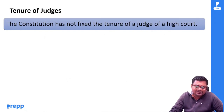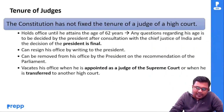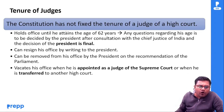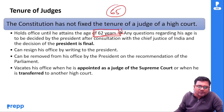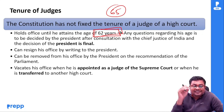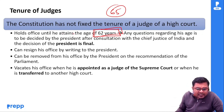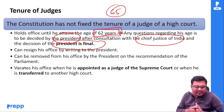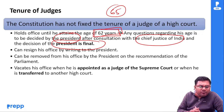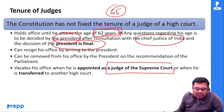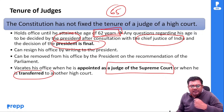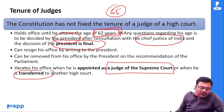Tenure of judges — similar to Supreme Court, कोई fix tenure नहीं है, minimum age prescribed नहीं की गई है। But hold office until he attains the age of 62 years — Supreme Court में 65 था, यहाँ पे 62 years है। Any question regarding his age — President decide करेंगे after consultation with CJI, और President का decision final होगा। Resign भी कर सकते हैं, President remove भी कर सकते हैं on the recommendation of Parliament। Office vacate भी कर सकते हो अगर आप Supreme Court के judge बन गए या transfer हो गया।